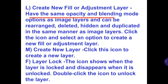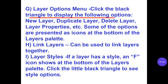L. Create new fill or adjustment layer: these have the same opacity and blending mode options as image layers and can be rearranged, deleted, hidden, and duplicated in the same manner as image layers. Click the icon and select an option to create a new fill or adjustment layer. M. Create new layer: click this icon to create a new layer. F. Layer lock: the icon shows when the layer is locked and disappears when it is unlocked. Double click the icon to unlock the layer. G. Layer options menu: click the black triangle to display options such as new layer, duplicate layer, delete layer, and layer properties.